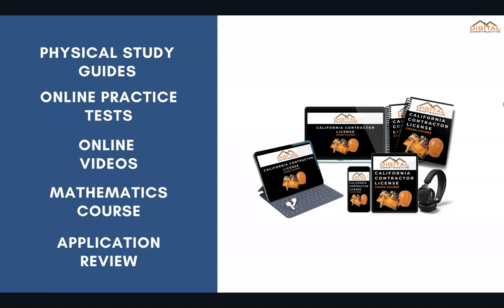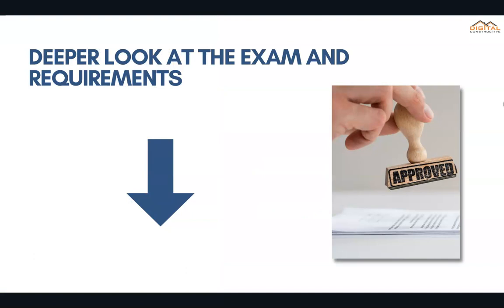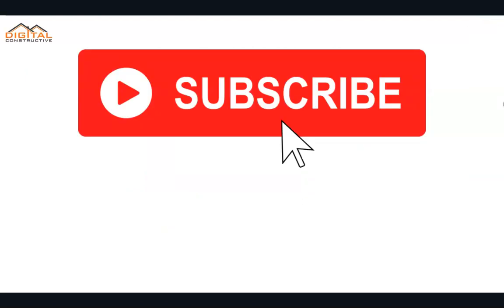There's also an application preparation tutorial and review so that your application is filled out correctly before you send it to the CSLB. We've got another video that goes a lot deeper into the exam, covering everything on the law side, what the process looks like, the types of math you'll need to know, and where you take the exam. We've also got another video covering the requirements, how to fill out your certification of work experience correctly, and the administrative side of getting a license in California. You can also find the C-51 crash course in the links below.